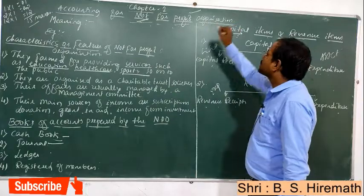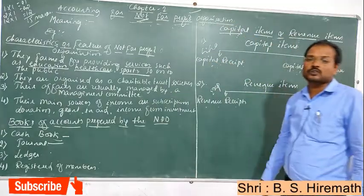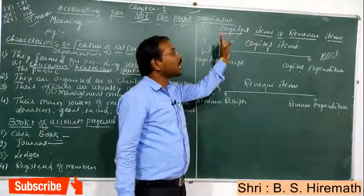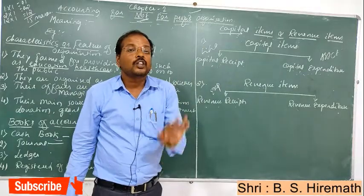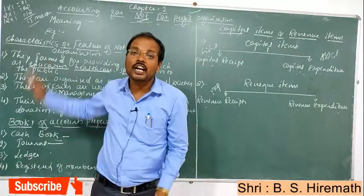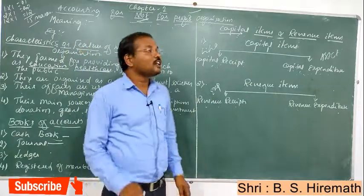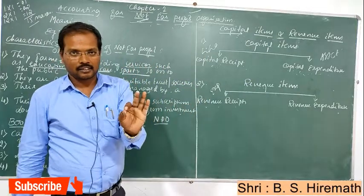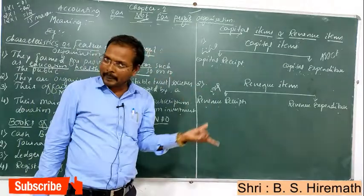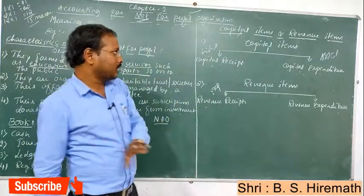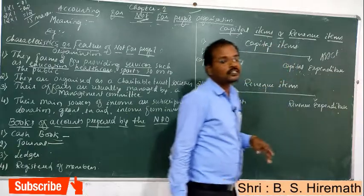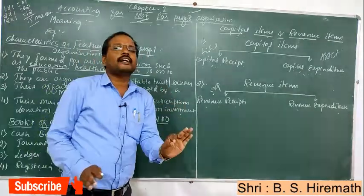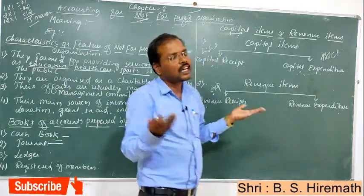The next part is capital items and revenue items. While recording for not-for-profit organizations, we must identify capital items and revenue items. Capital items go to the balance sheet — some on the liability side, some on the asset side. Revenue items go to the income and expenditure account — some on the debit side, some on the credit side.